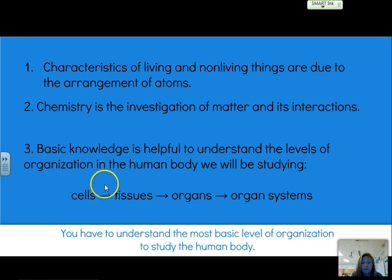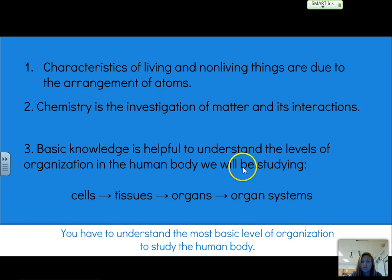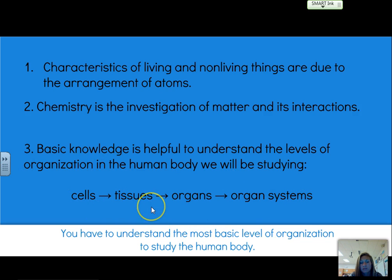Everything is made up of atoms, and the arrangement of those atoms matters. The chemistry part is the investigation of that matter and those interactions, and from understanding this, we can understand how the levels of organization are created to build an organism. We have cells that build up to make tissues, tissues build up to make organs, organs build up to make organ systems, that can then build an entire organism.